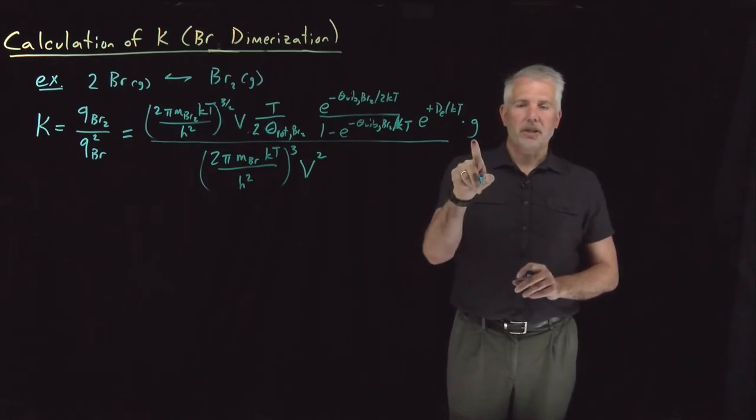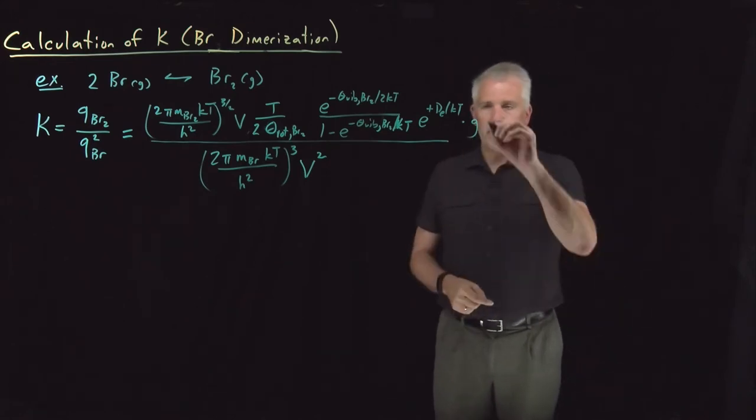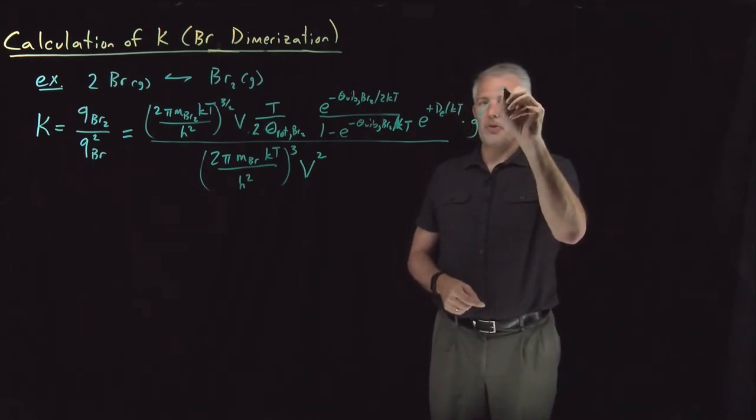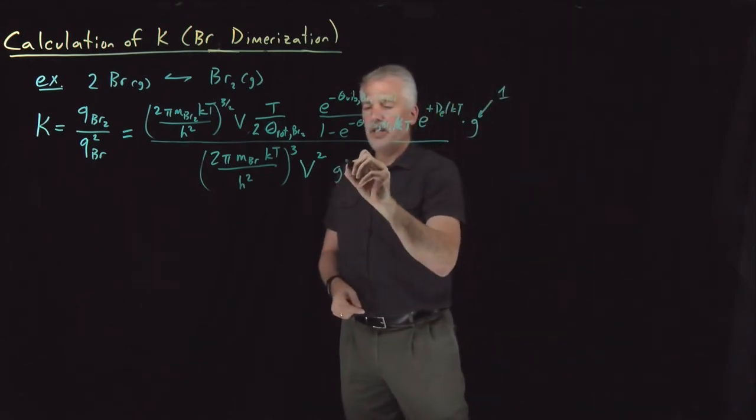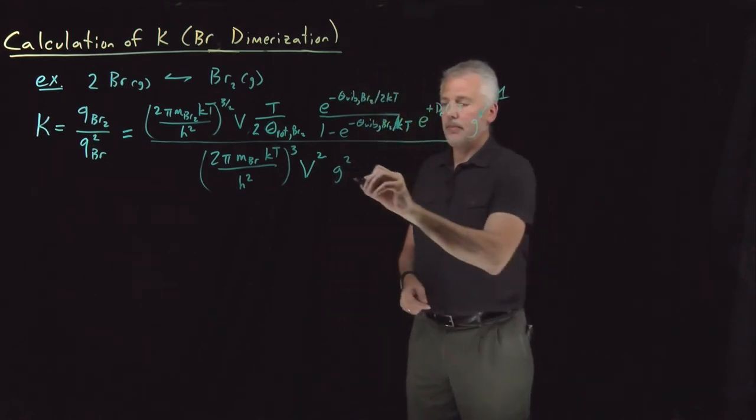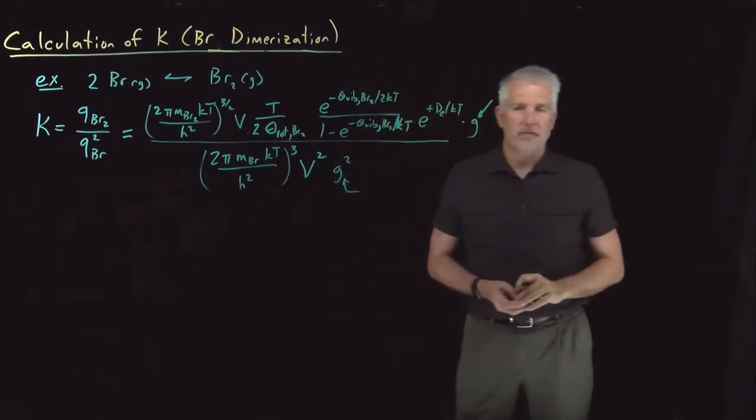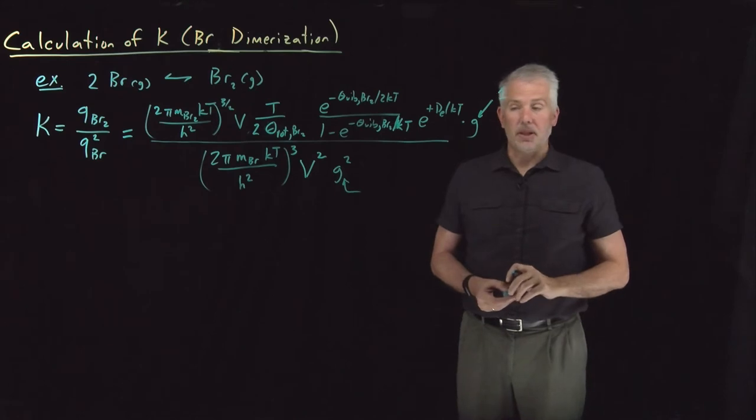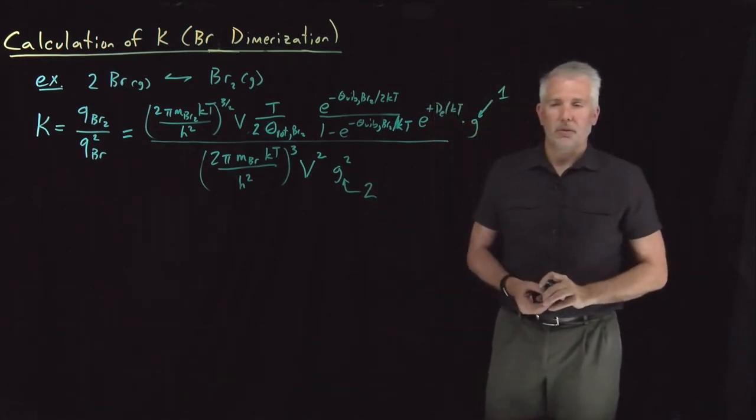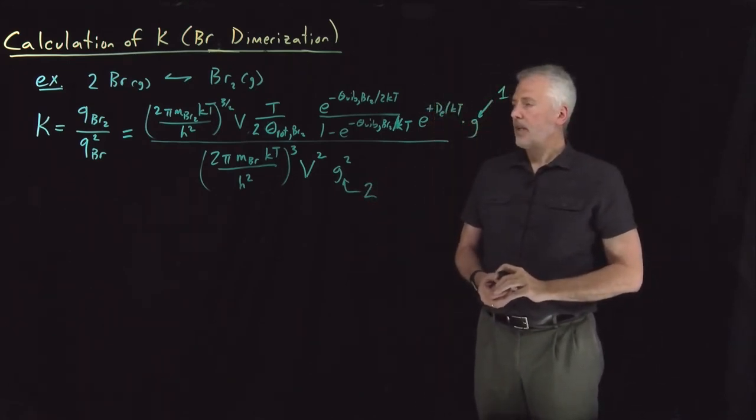I do have to worry about the electronic degeneracy. In this case, let me say the degeneracy for Br₂ is 1, and the g that I'm going to square for bromine atoms, because bromine atoms have an unpaired electron in them, they're doublets. The degeneracy is 2 for a bromine atom.